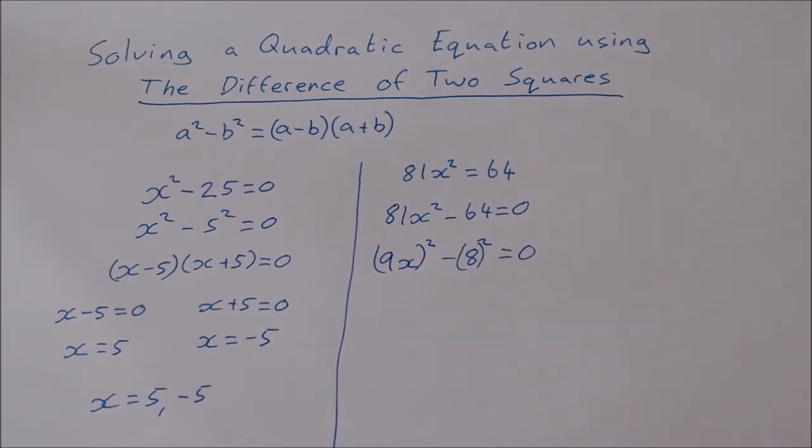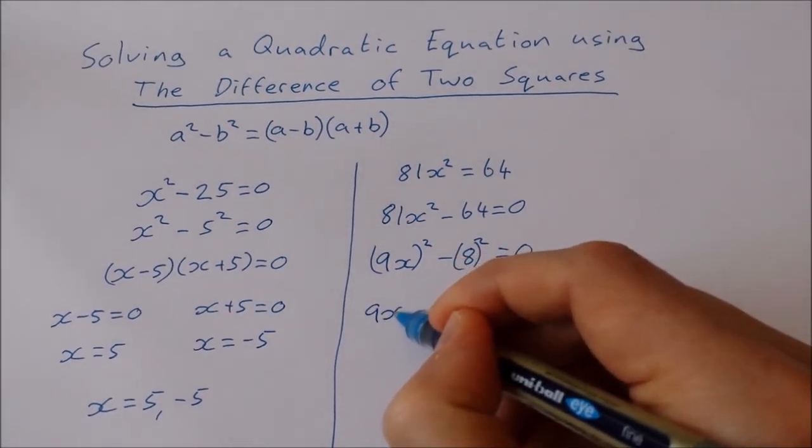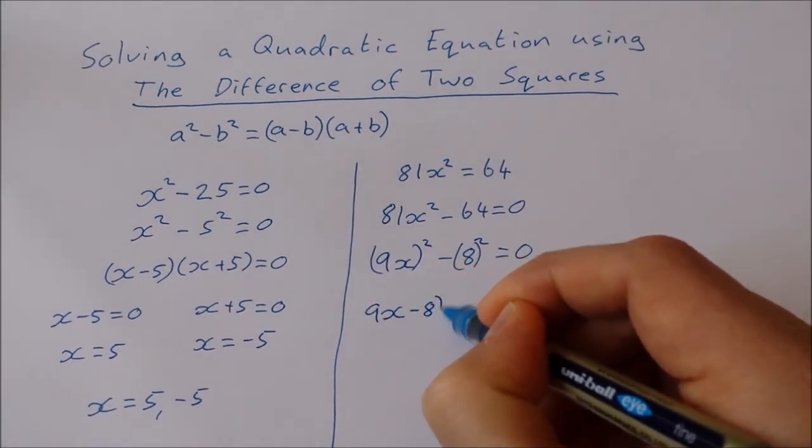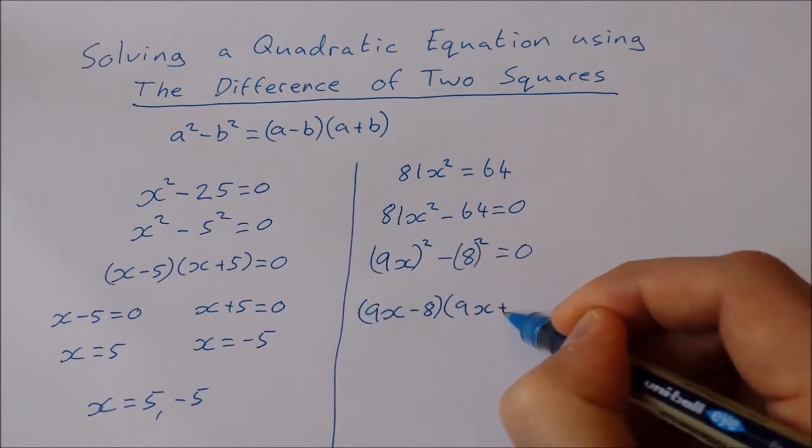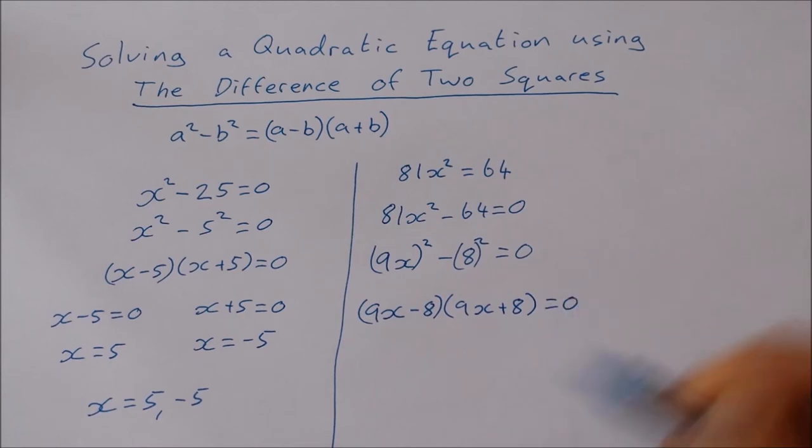Now using the difference of two squares formula, it's 9x minus 8 in the first bracket, and 9x plus 8 in the second, and that's equal to 0.